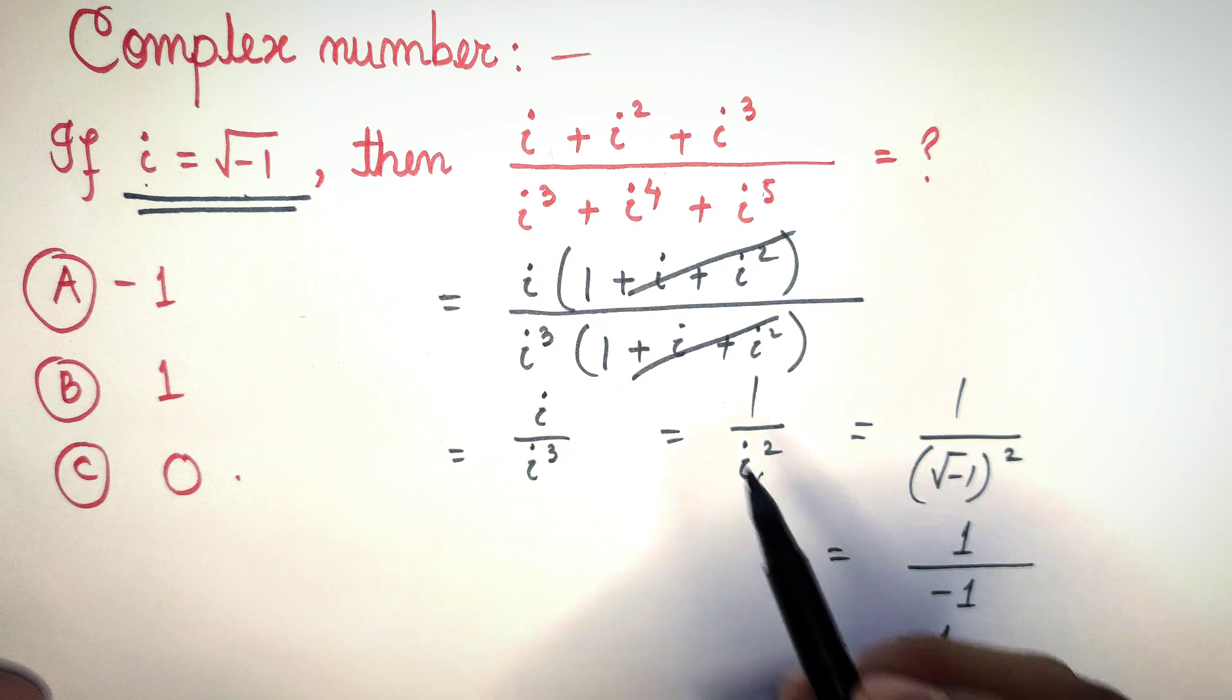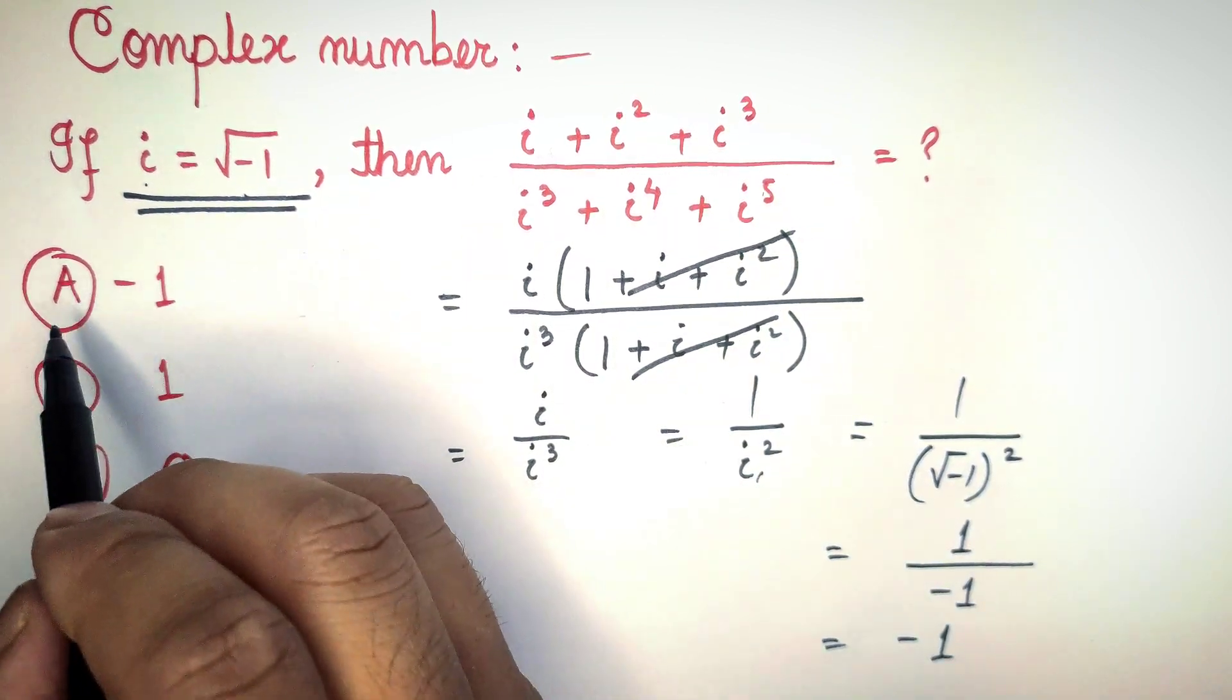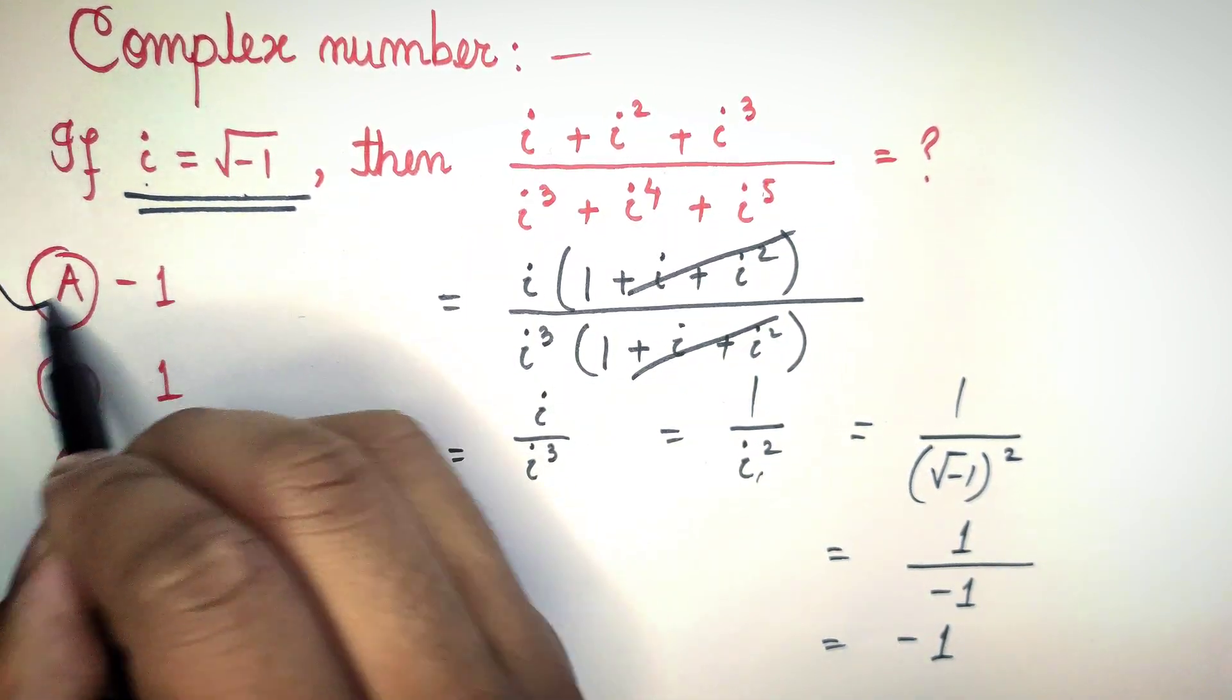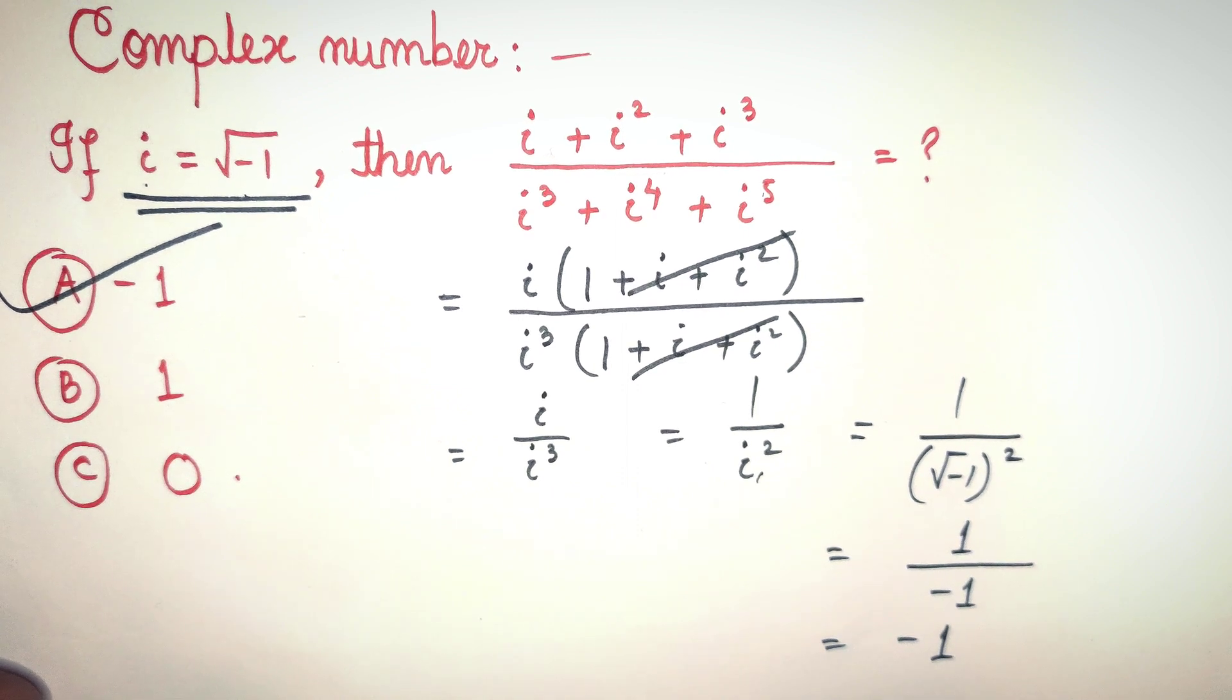So here, dividing these two, we get minus one. So the value of this is option number A, minus one. Thank you for watching, don't forget to subscribe my channel. See you in my next video.